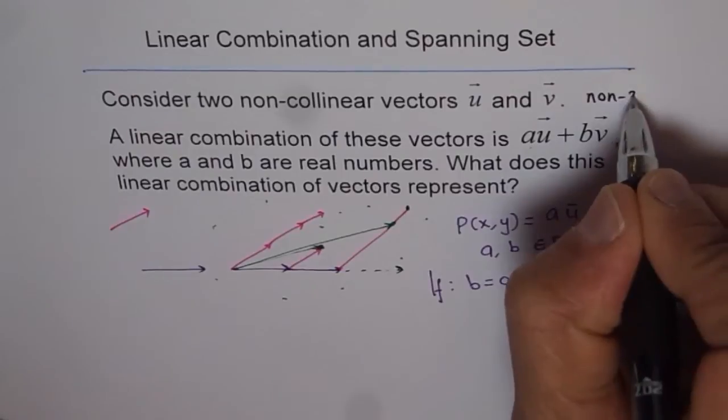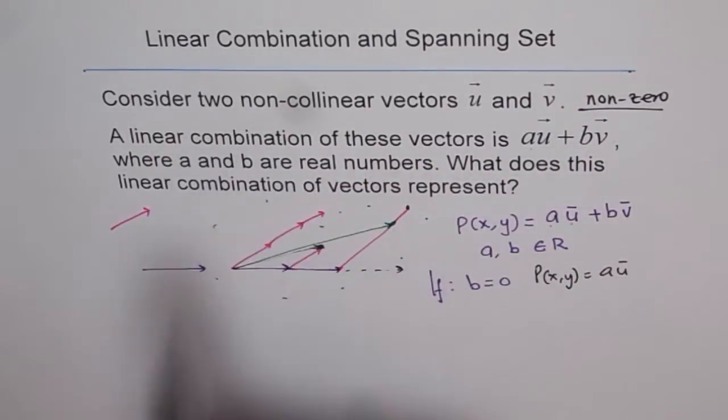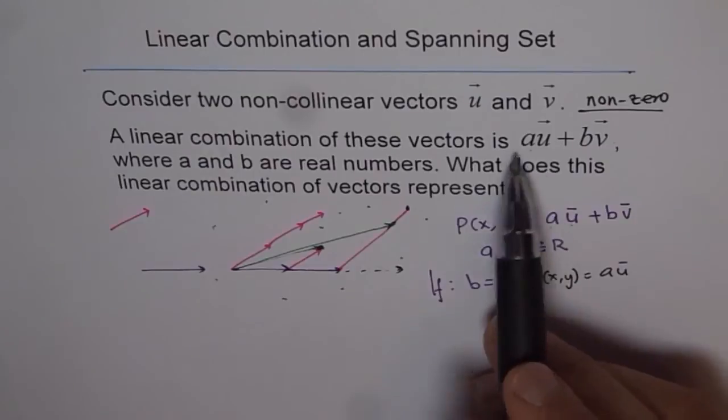We should say non-zero and non-collinear vectors u and v will form a spanning set for the plane, where each and every point can be written as a linear combination of these vectors.